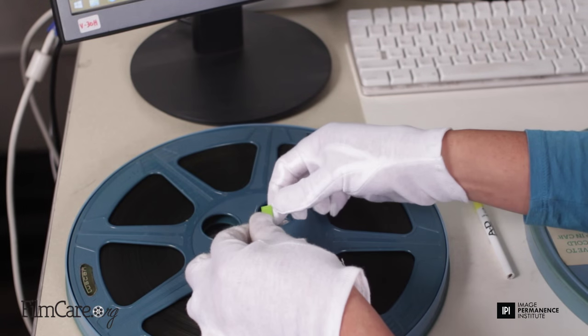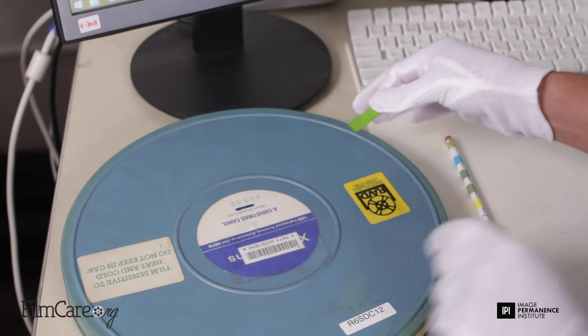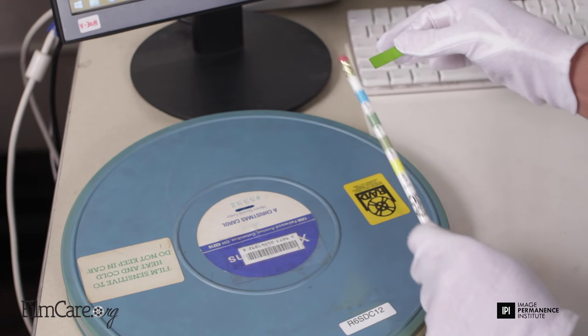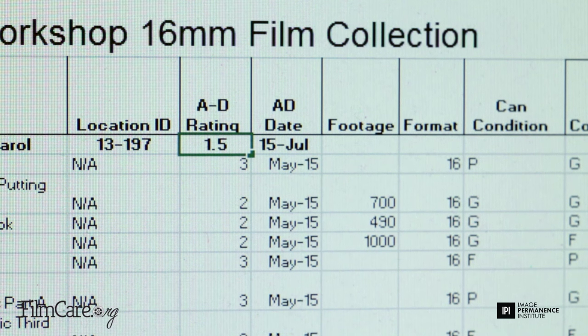After the correct period of time has passed, remove the AD strip and immediately compare the color to the bands of color on the reference pencil and record the number that most closely matches the color of the strip.